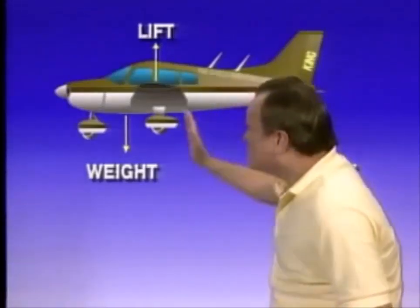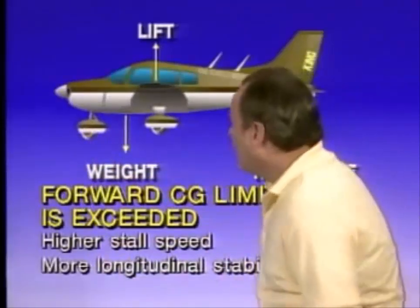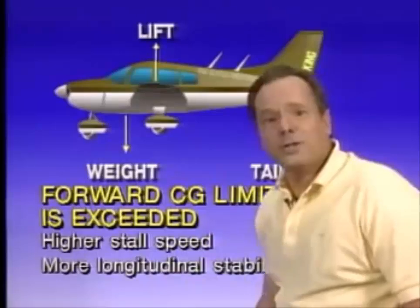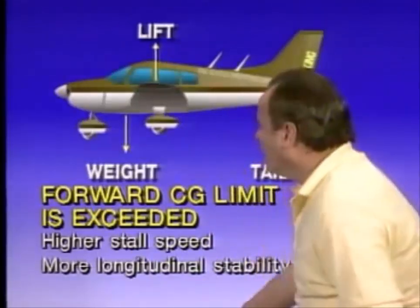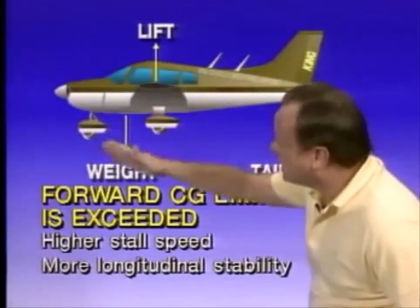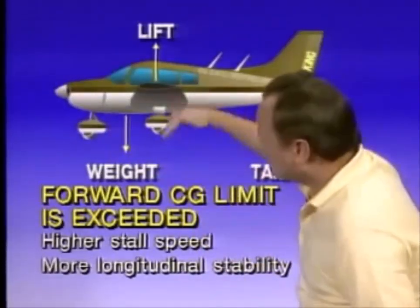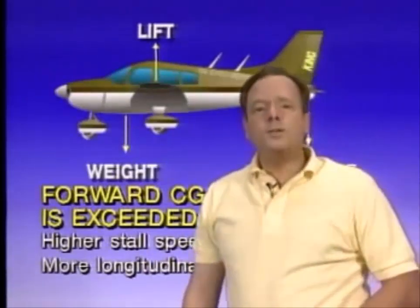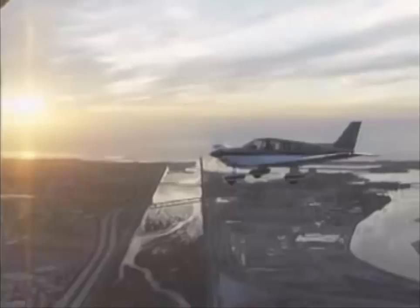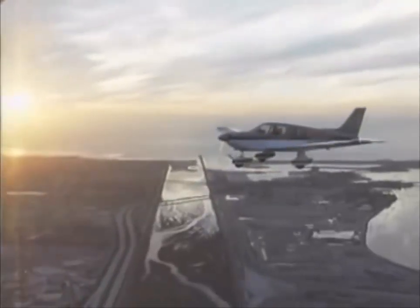If you exceed the forward CG limit of the aircraft, it will have a much higher stalling speed. Exceeding the forward CG limit would increase the aircraft's longitudinal stability because you would have less pitching — longitudinal stability is the pitching stability of the aircraft. So once again: a forward CG gives you more stability but less efficiency, and an aft CG gives you more efficiency but less stability — there is an obvious trade-off between stability and efficiency.